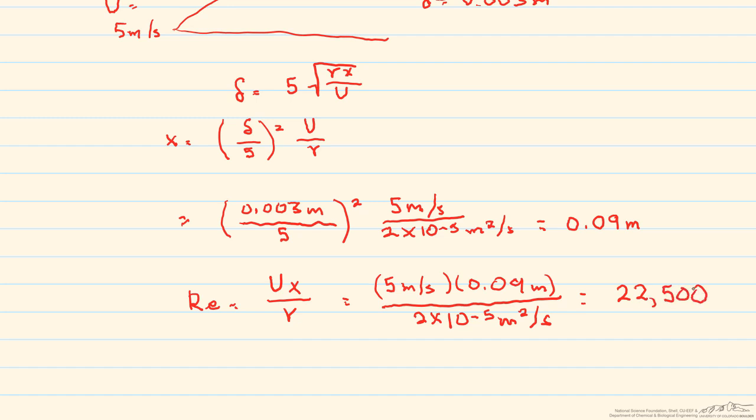The transition from laminar flow for a flat plate is a Reynolds number of 5 times 10 to the 5th. So this is laminar flow, and it means that the analysis that we just did is correct.